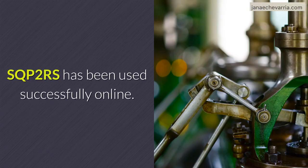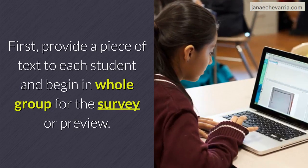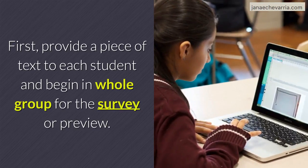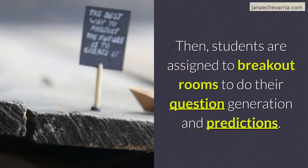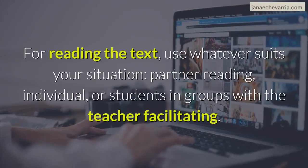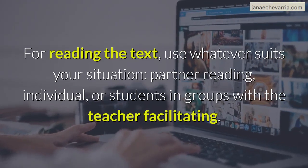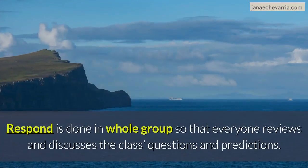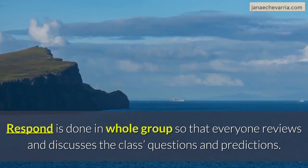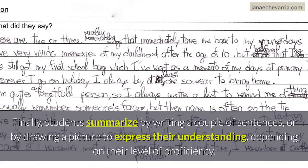SQP2RS has been used successfully online, but it needs to be done live. First, provide a piece of text to each student and begin in whole group for the survey or preview. Then students are assigned to breakout rooms to do their question generation and make predictions. For reading the text, use whatever suits your situation — partner reading, individual, or students in groups with the teacher facilitating. Respond is then done in whole group so that everyone reviews and discusses the class's questions and predictions. Finally, students summarize by writing a couple of sentences or by drawing a picture to express their understanding, depending on their level of proficiency.